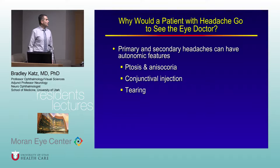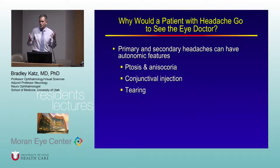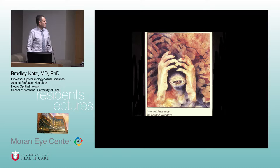Some primary and secondary headaches also have autonomic features involving the eye — affecting the eyelid, causing changes in pupil size, injection of the eye during a headache syndrome, and tearing. People have a headache, they have these associated eye symptoms, they assume something might be wrong with their eye, and so they go to the eye doctor.